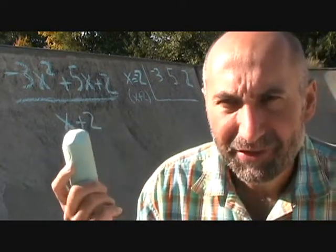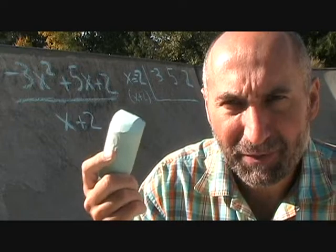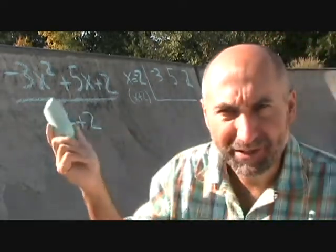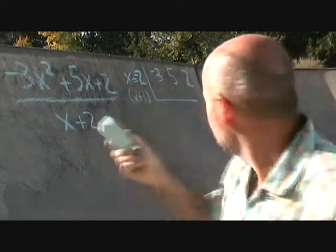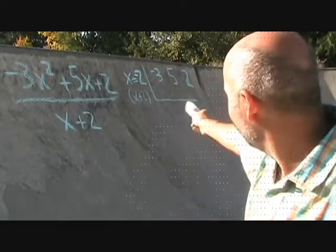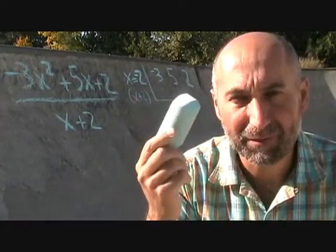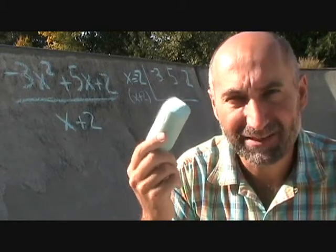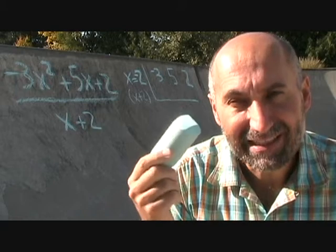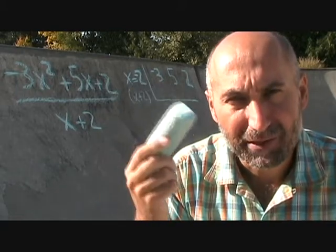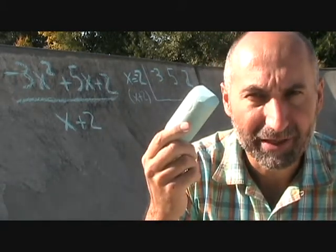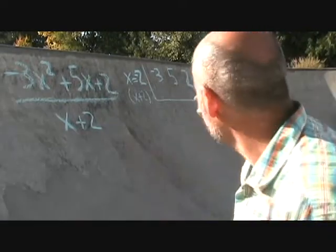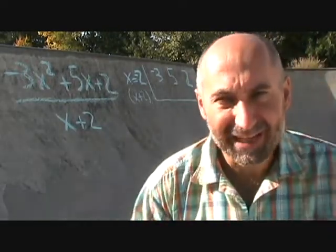What we have is x is equal to negative 2, which basically means x plus 2. We take our coefficients and put them up top. We take the negative 3, bring it down — negative 3 times negative 2 gives us 6. Then 5 plus 6 is 11. We take the 11, multiply by negative 2, and that gives us negative 22. Then negative 22 plus 2 is negative 20, which is exactly the same result we got with polynomial long division.